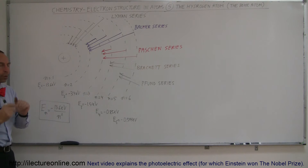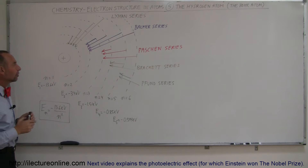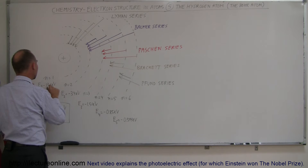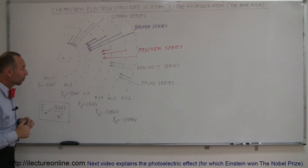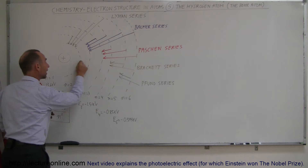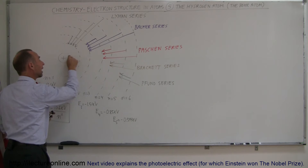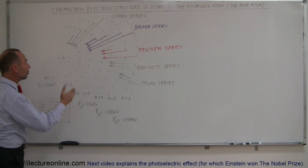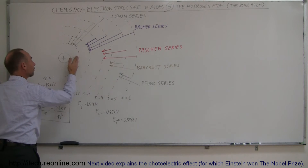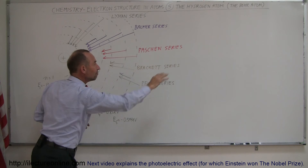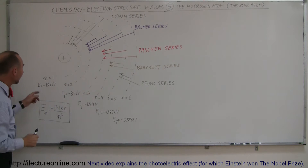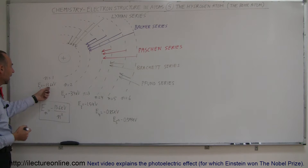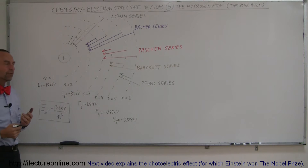So how do we find the energy required for those jumps? It turns out that the innermost energy level has a potential energy of minus 13.6 electron volts. In other words, if an electron resides in the innermost energy level of a hydrogen atom, to completely remove it from the atom you need to supply 13.6 electron volts of energy.